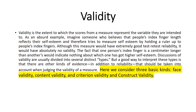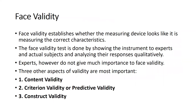We consider three basic kinds: face validity, content validity, criterion validity, and construct validity. We are not focusing much on face validity — face validity basically means the measuring device looks like it is measuring the correct characteristics. The face validity test is done by showing the instrument to experts and actual subjects and analyzing their responses qualitatively. However, experts do not give much importance to face validity, which is why it is not a very popular kind of validity.